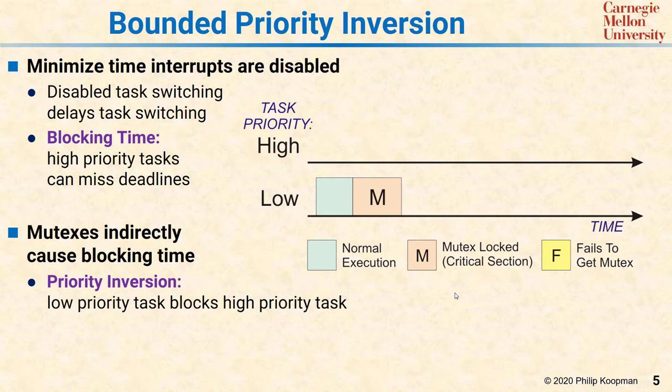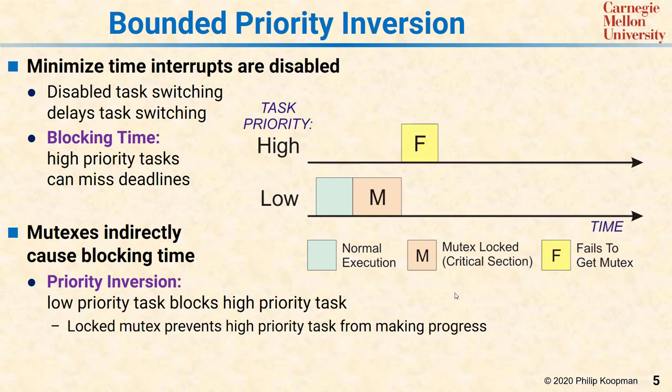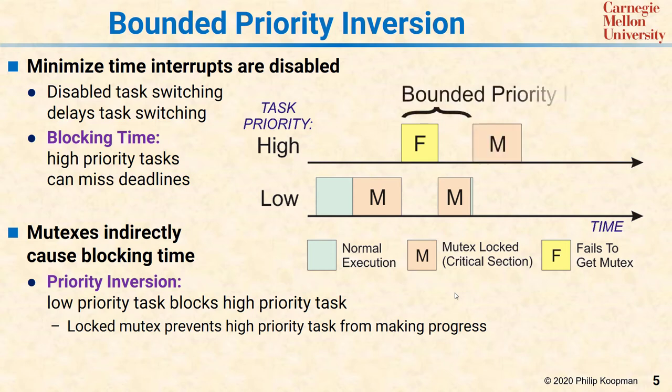If the high priority task needs the mutex, it can start execution because it has high priority, but it'll see the mutex is taken and won't be able to make progress. On a well-designed system, the high priority task will release the CPU to give the low priority task a chance to complete. The low priority task will finish its work with the mutex, release it, and then the high priority task will be able to run and get the mutex. This is called bounded priority inversion.